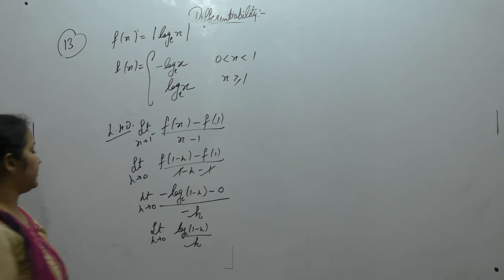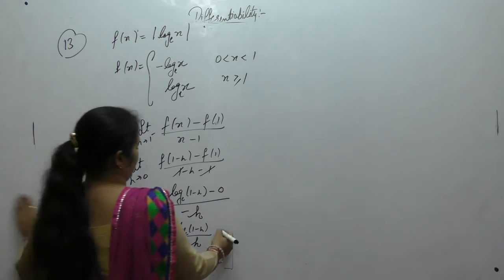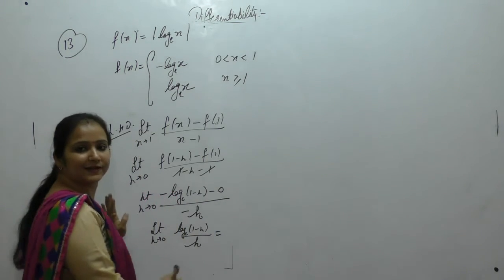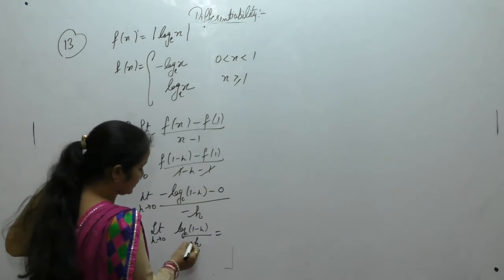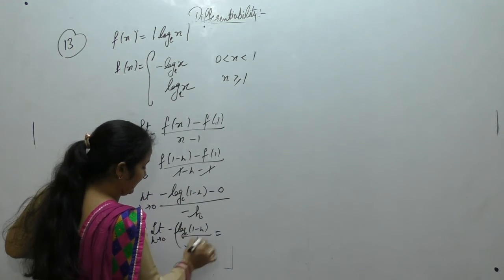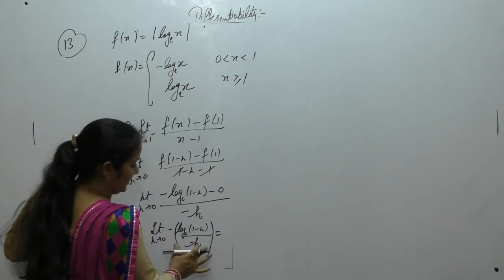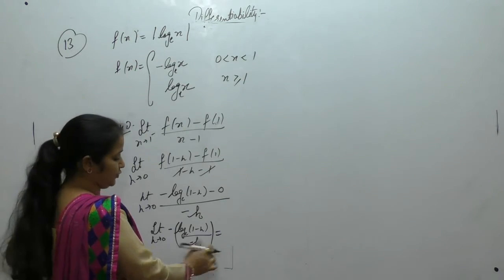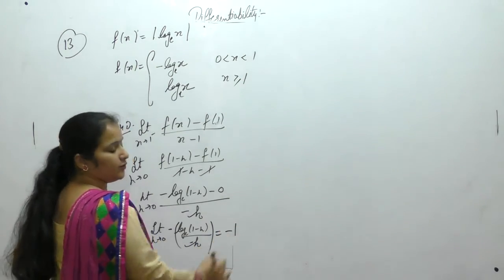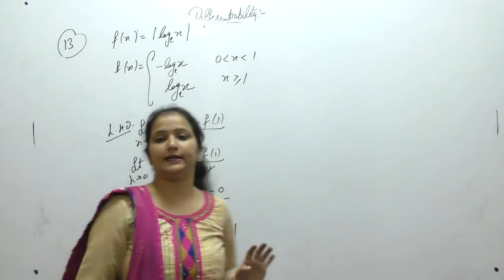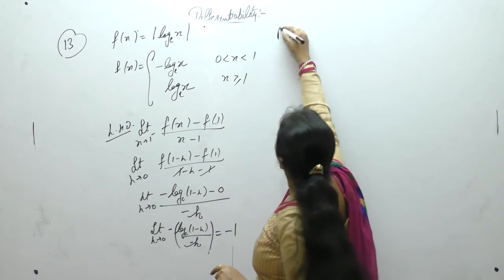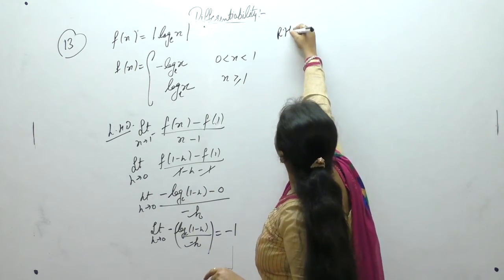We get the value of this. Since there is a negative sign, multiply by negative. The limit as h tends to 0 of log(1 − h) / (−h) has value 1, so we get negative 1 as the left hand derivative.